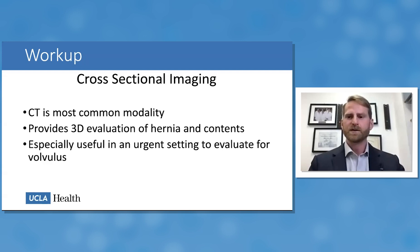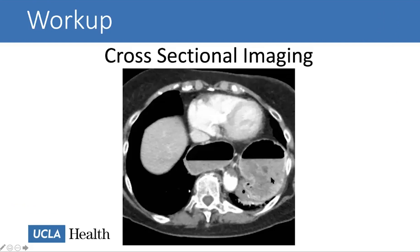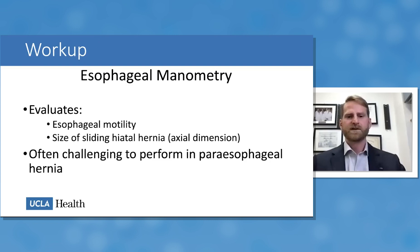Cross-sectional imaging is less commonly used but provides three-dimensional evaluation, is easy for providers to interpret, and is especially useful in urgent settings to evaluate for volvulus. A representative CT chest image shows intrathoracic stomach in cross-section with two parts of the stomach visible — putting it at risk for volvulus — though no wall thickening is present and the stomach enhances well, providing useful diagnostic information.